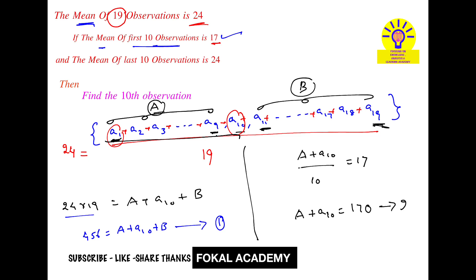Similarly, the mean of the last 10 observations from a₁₀ to a₁₉ equals 24. From a₁₁ to a₁₉ we have variable B, so a₁₀ plus B divided by 10 equals 24. Therefore, a₁₀ plus B equals 240. This is Equation 3.